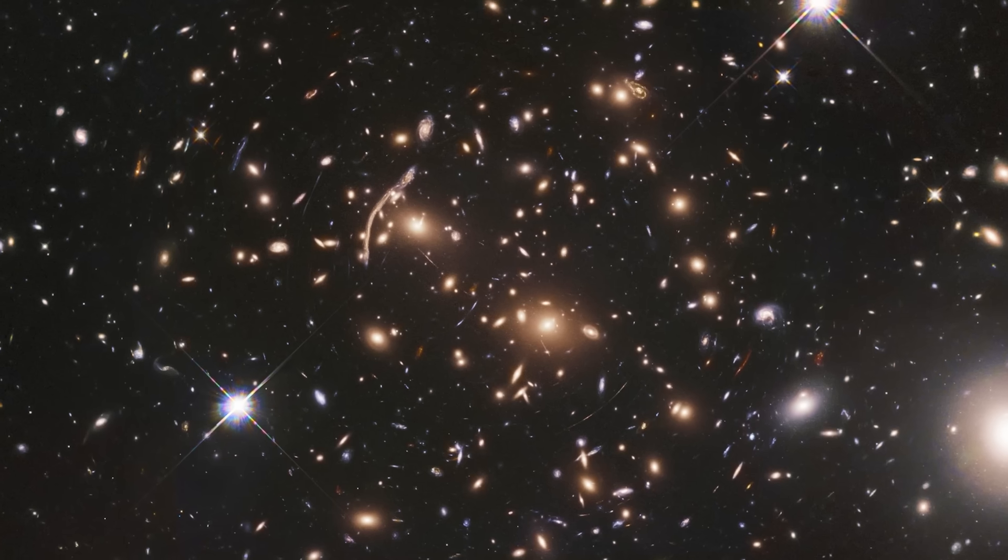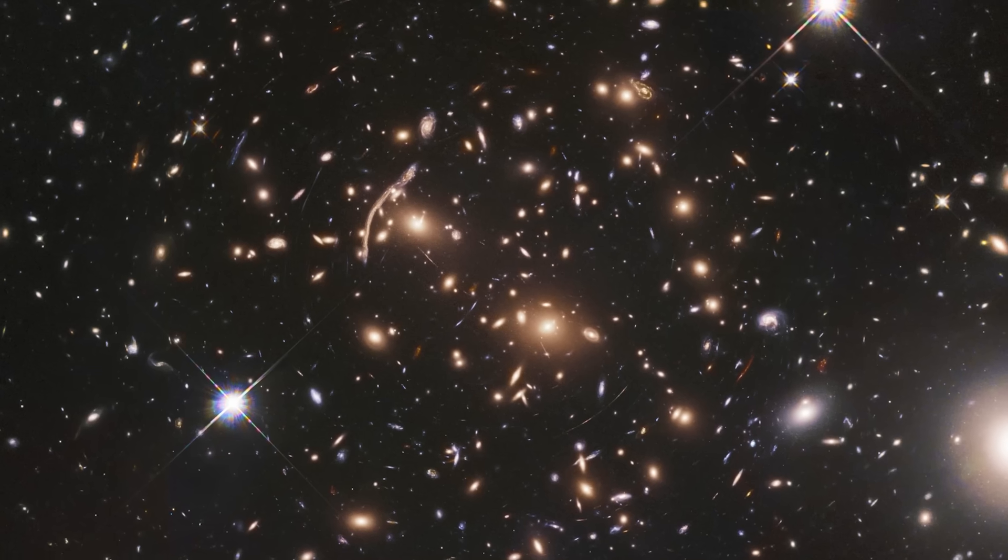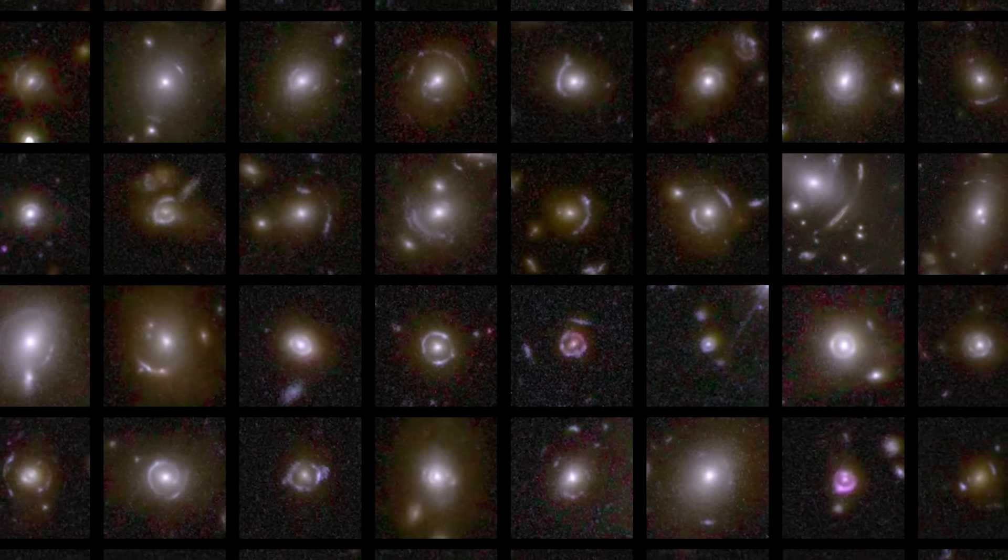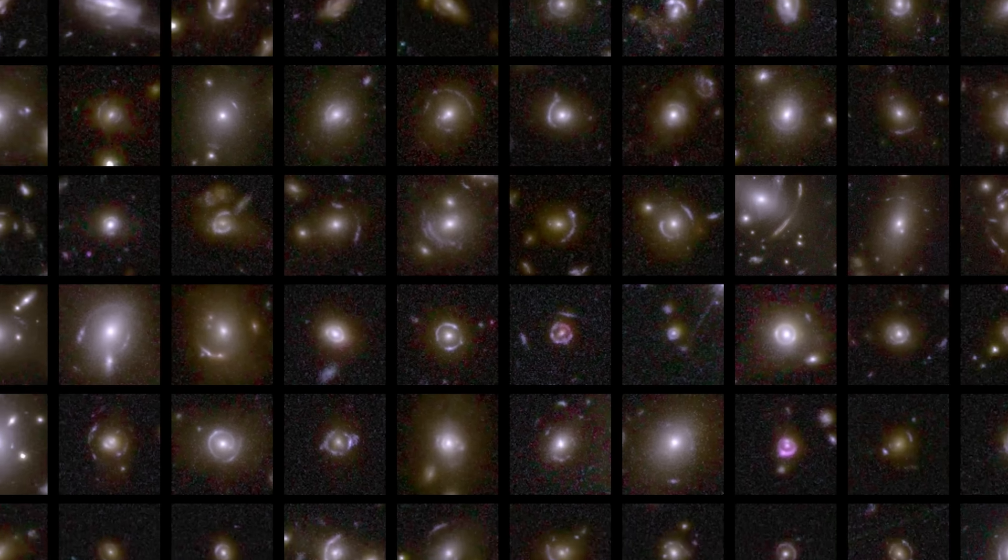Before Euclid, only a few dozen strong gravitational lenses had been well studied. But in just one week, Euclid found over 500.